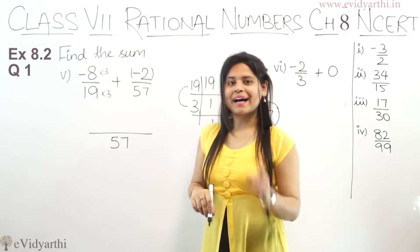Now coming to the last part. The last part has minus 2 and 1 upon 3 plus 4 and 3 upon 5 — these are mixed fractions. So we first convert the mixed fractions to normal fractions. For the first: 3 into 2 is 6, plus 1 is 7, giving 7 upon 3, but remember this is minus, so minus 7 upon 3. For the second: 5 into 4 is 20, plus 3 is 23, giving plus 23 upon 5.